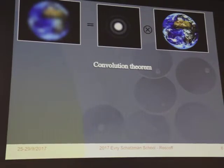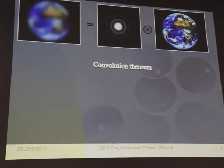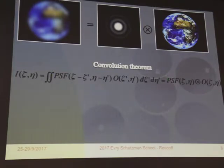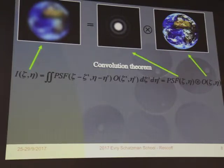First, I'm going to present different theorems which are very useful for students to know and apply. The first very important theorem is the convolution theorem, which says that the image you see from a distant source is simply the ideal image convolved with the point spread function. Mathematically, the distribution of intensity as a function of the angular coordinates is a convolution product of the real source image by the point spread function. This is the real image, this is the PSF, and this is the result.